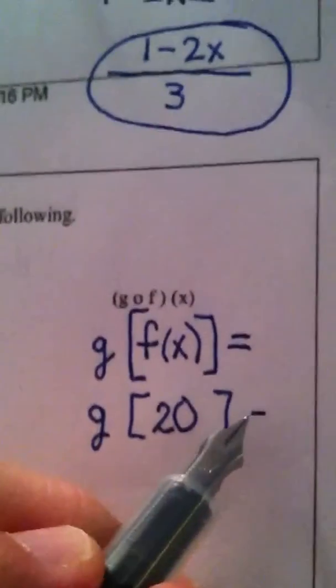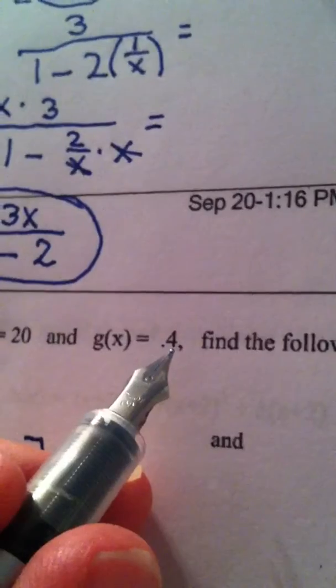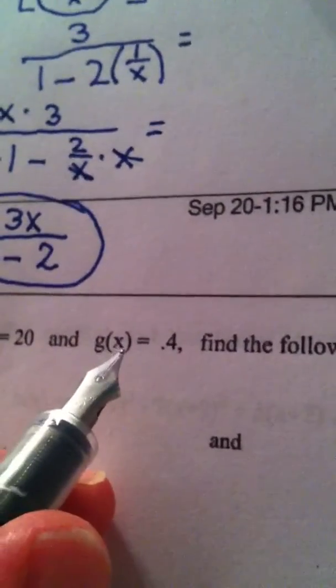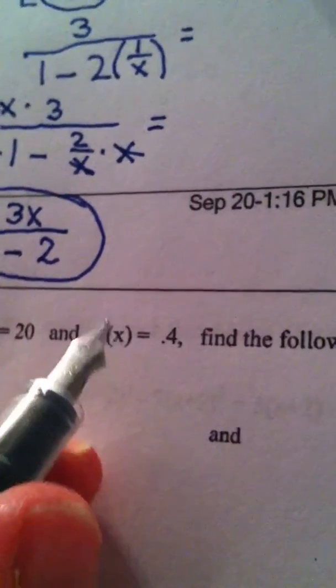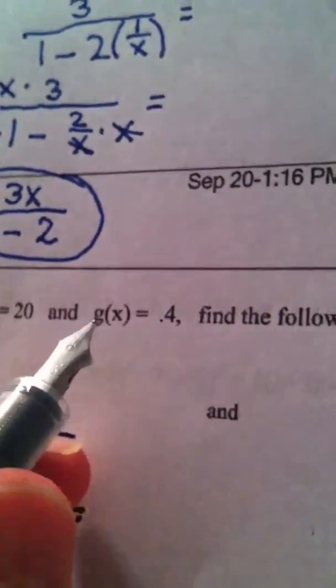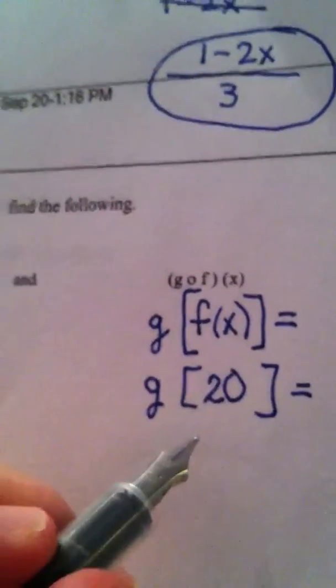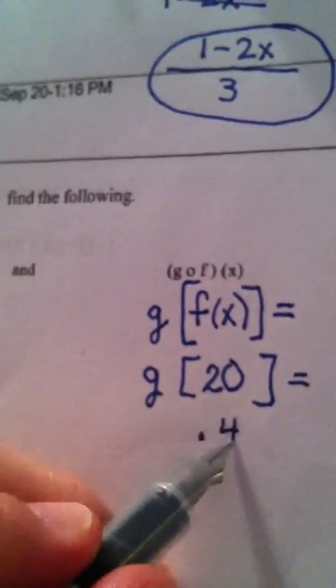Now, to continue with the problem, I put 20 into g. But g is also a constant function. No matter what I put into g, regardless of what this is, my answer is 0.4. g of anything is always 0.4. Therefore, g of 20 is also 0.4.